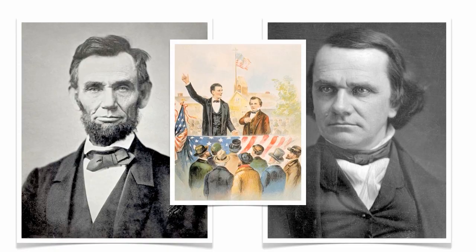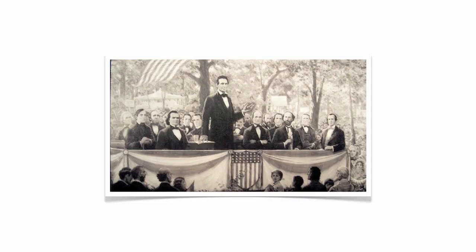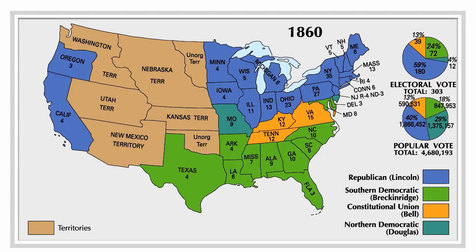Now, about why the election of Abraham Lincoln outraged the South. Obviously, he was part of a political party that was against slavery, but that was only part of the equation. Let's take a look at the map of Lincoln's victory. Like the country, the Democratic Party was divided into the Northern and the Southern Democratic Parties — divided over the issue of slavery, just like the country was.